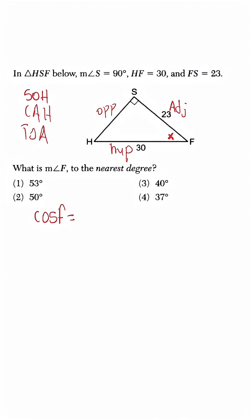So cosine of F is going to be equal to 23 over 30. And because we're trying to find the angle measure, we're going to use the inverse function.